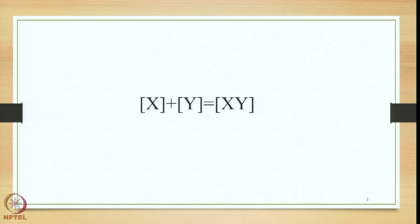Bahuvrihi Samasa is an important type of Samasa in Sanskrit. The explanation of the Bahuvrihi Samasa can be given in brief by this particular equation which we have been explaining in each and every lecture. As we have already stated, the repetition is to bring home the point of the three important features of the Samasa and who is the head in which Samasa. In the Bahuvrihi Samasa, neither X nor Y, the constituents, acts as the head of the Samasa. The head lies outside of the constituents of the Samasa, which is a very unique feature of the Bahuvrihi Samasa.